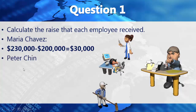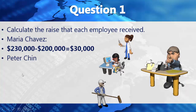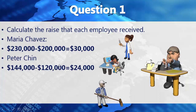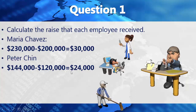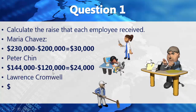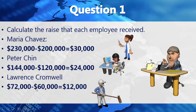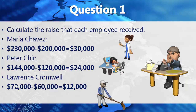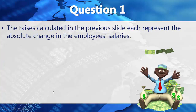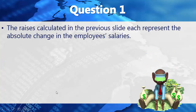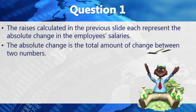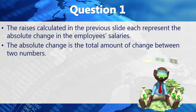Similarly for Peter Chin, we subtract his 2018 salary from his 2019 salary and get a difference of $24,000. The raises calculated represent the absolute changes in the employee salaries. The absolute change is the total amount of change between two numbers.